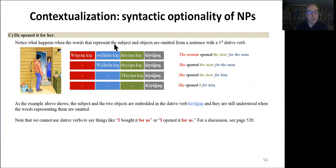Notice what happens when the words representing the subject and objects are omitted from a sentence with a first dative verb. So the woman opened the door for the man, contextualized with the illustration and the Lakota sentence. The students can notice that the noun phrases can be dropped, any of them can be dropped, and that the verb alone can constitute the full clause in which case it will translate with she opened it for him. As the example above shows, the subject and the two objects are embedded in the dative verb and they are still understood when the words representing them are omitted. This is another way of showing things such as zero affixes and the optionality of noun phrases without using technical language and more through contextualization, scaffolding, and enhanced input.